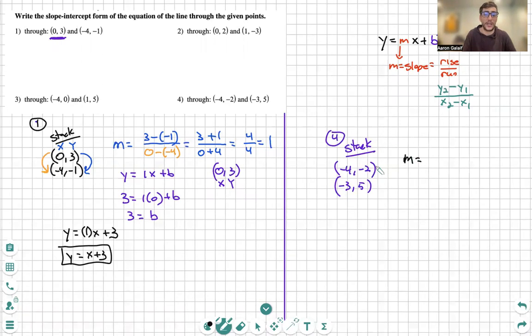m is my stack. So I can just do y's first, y's on top, negative two minus five. Then we're going to do x's, right? We'll do negative four minus negative three. Let's clean it up. Top becomes negative seven. Bottom becomes negative four plus three. Negative seven over negative one. Seven is my m.